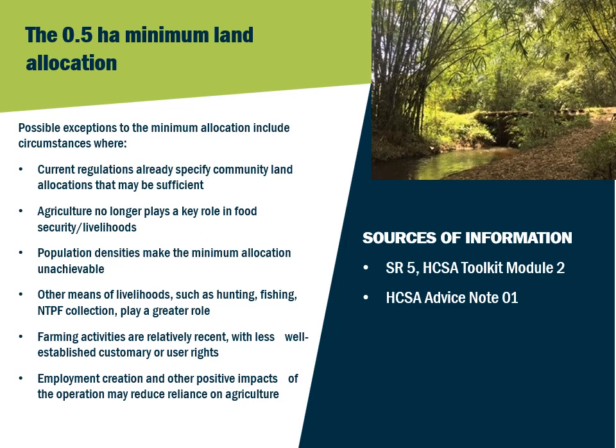The allocation of 0.5 hectares of land per person may not be practical or desirable in some circumstances. The particular circumstances of communities are taken into account and exceptions to the 0.5 hectares per person minimum allocation may be made, requiring the free, prior and informed consent of communities. Possible exceptions include settings where current regulations already specify sufficient community land allocations, where agriculture no longer plays a key role in food security and livelihoods, where population densities make the minimum allocation unachievable, where other means of livelihoods such as hunting, fishing and NTFP collection play a greater role than agriculture, where farming activities are relatively recent, and where employment creation may reduce reliance on agriculture.